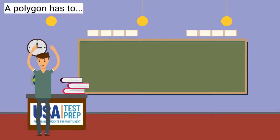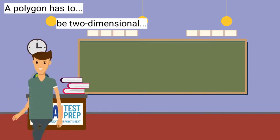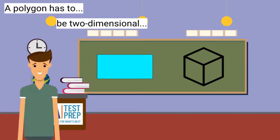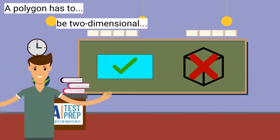A polygon is a flat shape or two-dimensional. Look at these two figures. Which figure is a polygon because it is two-dimensional? This figure is a polygon because it is flat.